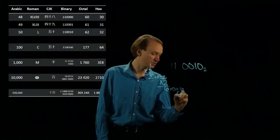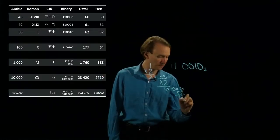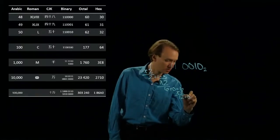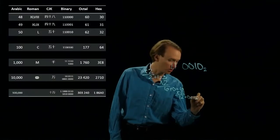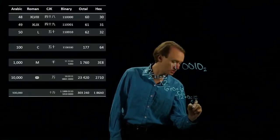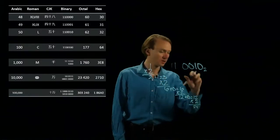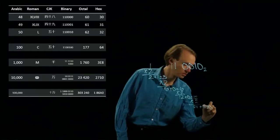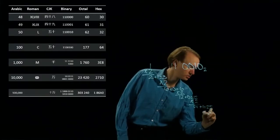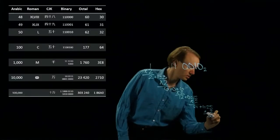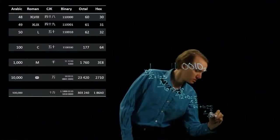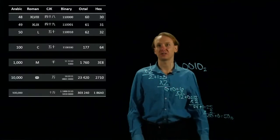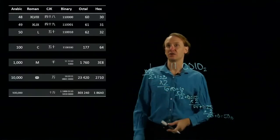Multiply by 2 gives me 12. Add the fourth bit, leaves me with 12. Multiply by 2 gives me 24. Add the fifth bit, multiply by 2, and then add the last bit. So this gives me 50 in base 10, and that is what I see over in my number line.